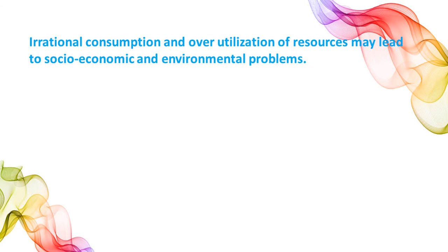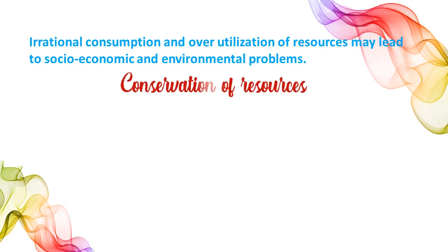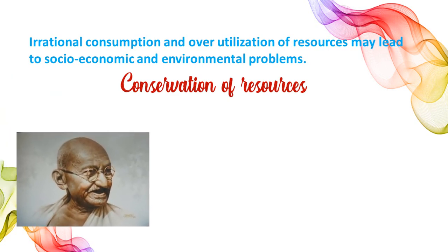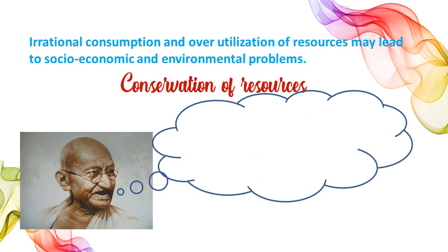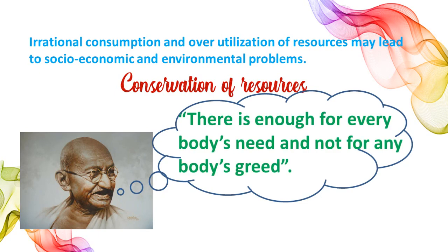We all know that resources are vital for any developmental activity, but some greedy people are over-utilizing these resources. That is why the great leader and father of our nation, Gandhiji, said that there is enough for everybody's need and not for anybody's greed. He placed the greedy and selfish individuals and the exploitative nature of modern technology as the root cause of resource depletion at the global level. He was surely against mass production and wanted to replace it with production by the masses.